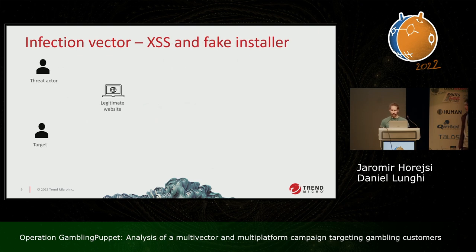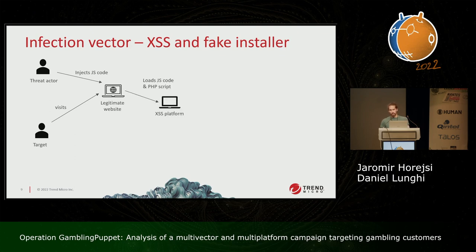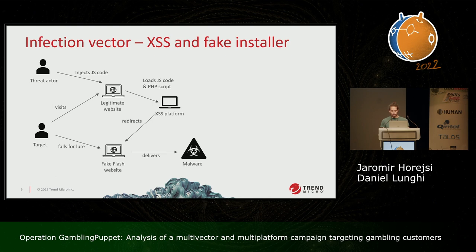The second infection vector is a bit more complicated. It starts with the threat actor finding a legitimate website and exploiting a persistent cross-site scripting vulnerability, injecting some JavaScript code. That code, triggered when the target visits the website, loads a third-party JavaScript code from a third-party server — which we call the XSS platform — and also loads some PHP script. After this code runs, it redirects the target to a final website offering a fake Flash installer. If the target installs the fake installer, they get delivered malware. We saw this technique used for different malware families.